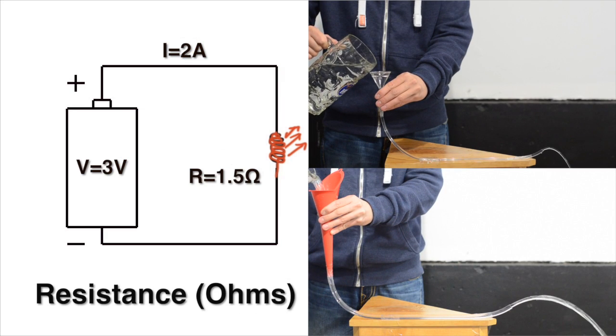If we use a thinner hose, the water slows down. The same thing happens when you switch to a thinner wire. The current has a harder time flowing. In other words, there's more resistance against the current flow, and resistance is measured in ohms.